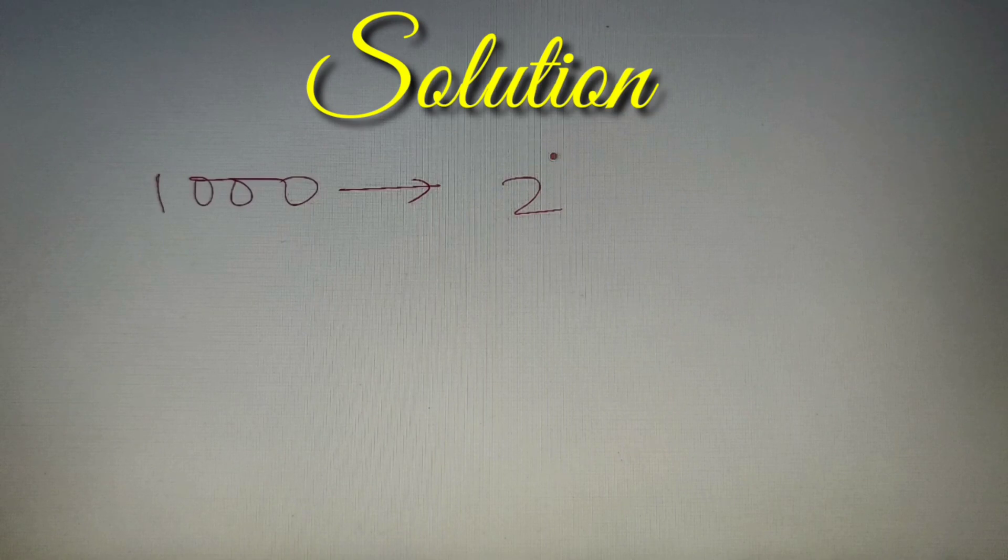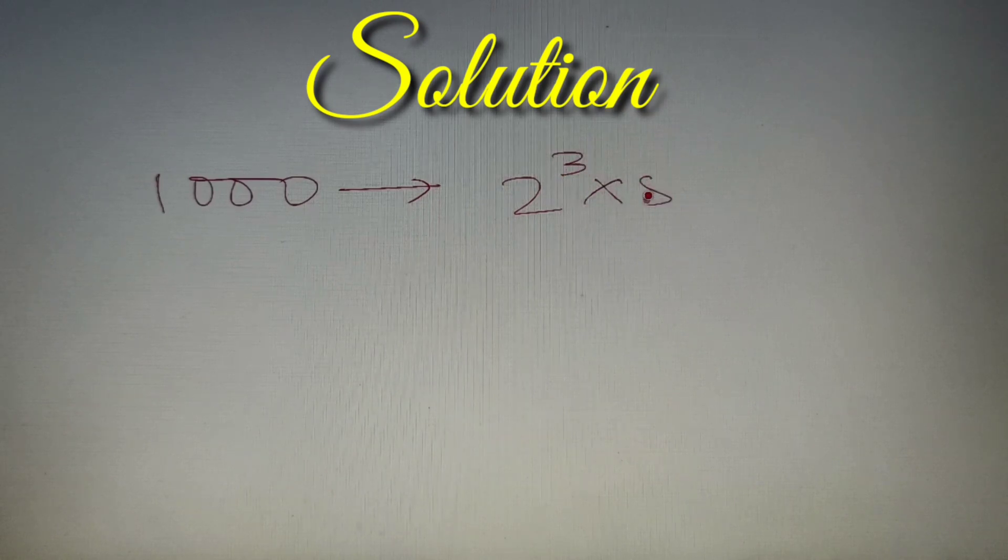Now thousand upon prime factorization will give us 2 cube into 5 cube because 2 cube is equal to 8 and 5 cube is equal to 125. So 8 into 125 is equal to thousand.